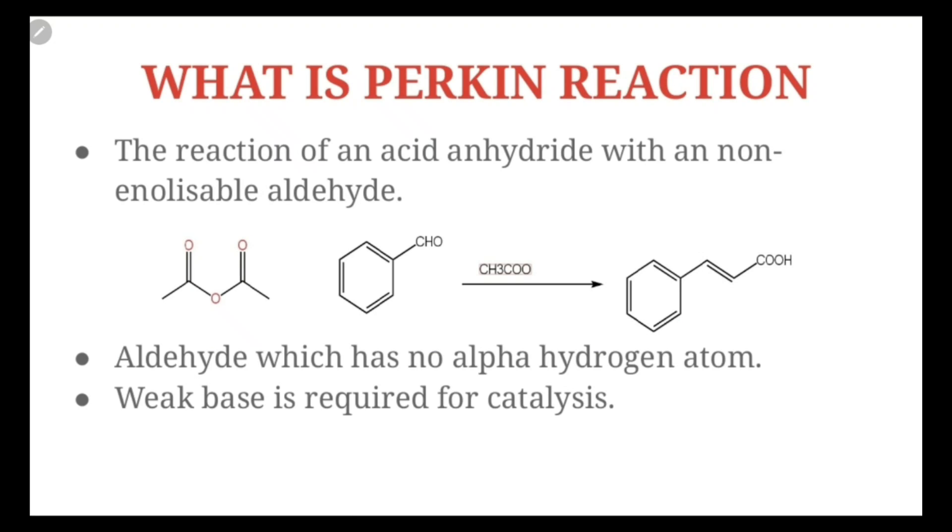Let's start with what is Perkin reaction. Perkin reaction is the reaction of an acid anhydride with a non-enolizable aldehyde. What is a non-enolizable aldehyde? Now look here, this is the alpha carbon and it has no hydrogen, so due to this enolate formation is not possible.